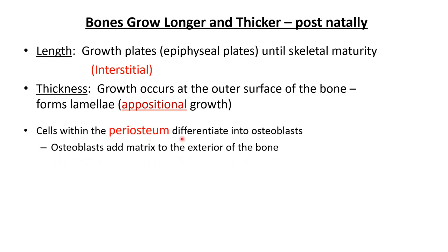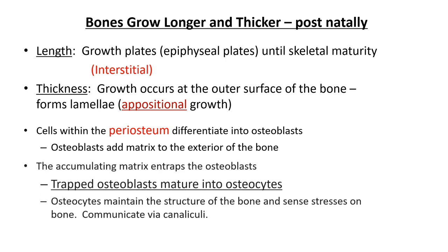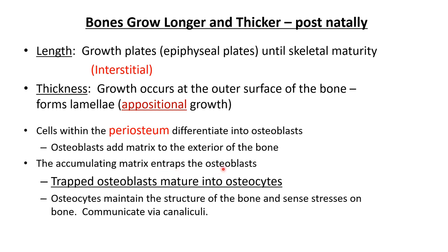In appositional growth, periosteal cells differentiate into osteoblasts that secrete extracellular matrix, which then polymerizes and crystallizes. Those osteoblasts become entrapped in the secretory process and under standard circumstances form relatively quiet osteocytes. However, these osteocytes can flip back and forth between osteoblast — laying material down — and osteoclast — taking material up. They communicate through interstitial fluid via canaliculi, the microscopic channels in the hydroxyapatite crystal, for signaling and nutrition.